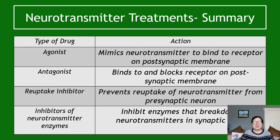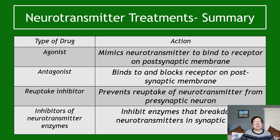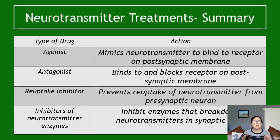Summary: an agonist mimics a neurotransmitter to bind the receptor on the postsynaptic membrane and cause the same reaction — whether inhibitory or excitatory. Antagonists bind to and block the receptor on the postsynaptic membrane. Reuptake inhibitors prevent reuptake of the neurotransmitter. Breakdown enzyme inhibitors inhibit the enzymes that break down neurotransmitters in the synaptic cleft. Flashcards of this summary slide might be a really good idea if you're struggling to memorise it.